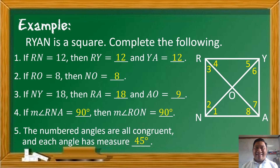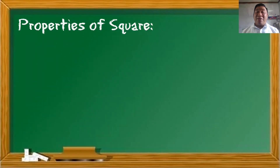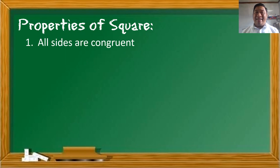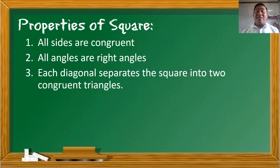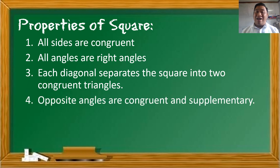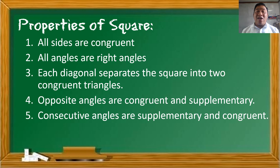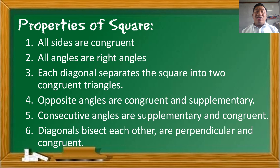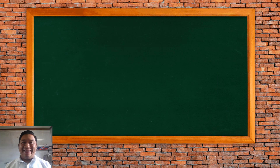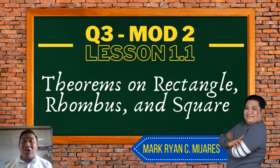Here are the other properties of square: (1) all sides are congruent; (2) all angles are right angles; (3) each diagonal separates the square into two congruent triangles; (4) opposite angles are congruent and supplementary; (5) consecutive angles are supplementary and congruent; (6) diagonals bisect each other, are perpendicular, and are congruent. That's our discussion regarding theorems on rectangle, rhombus, and square. If ever na meron pa kayong questions on this lesson, do not hesitate to comment below or mag-send ng private message sa aking Facebook account. Until the next video, bye-bye!